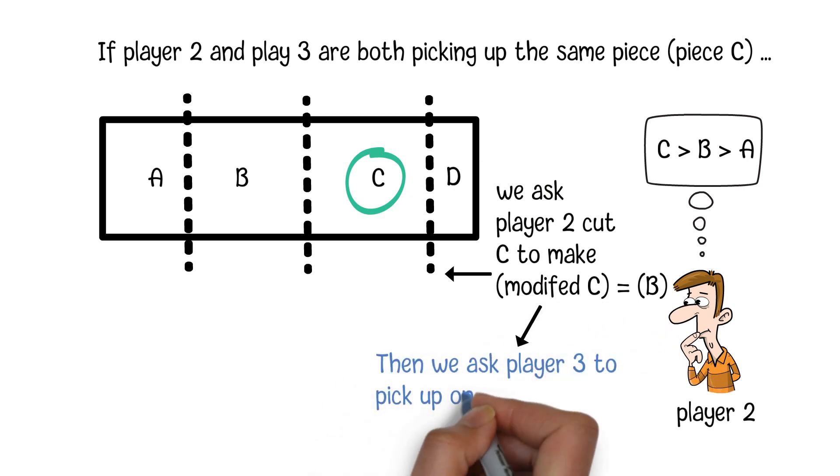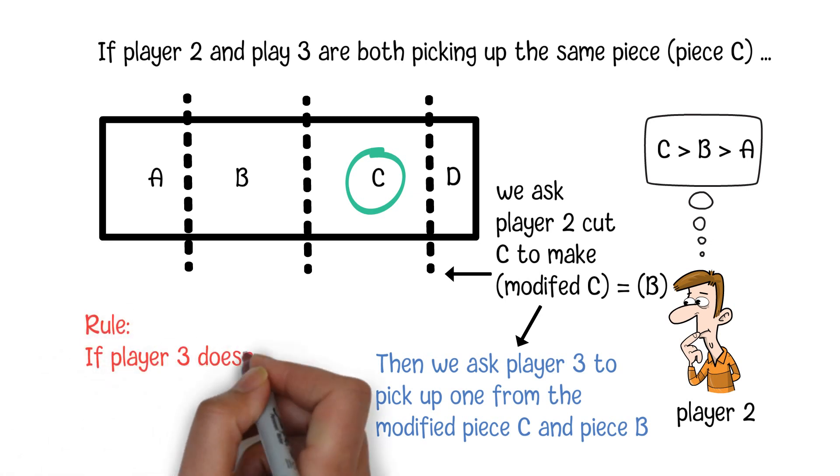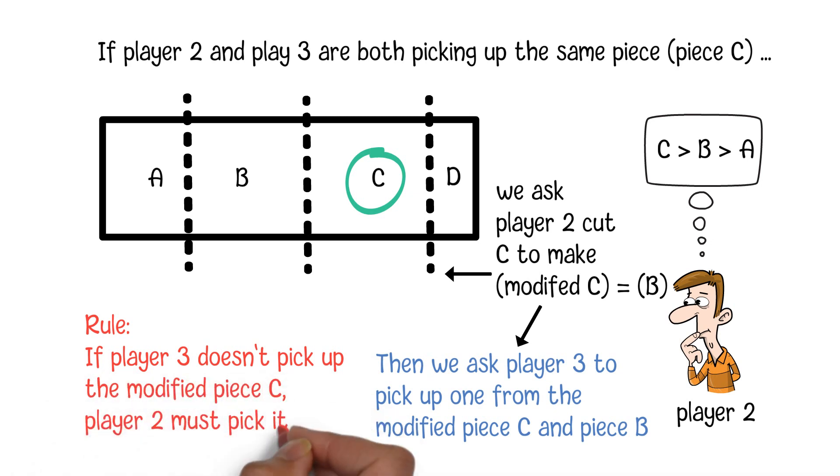Then we ask player 3 to pick up one from the modified piece C or piece B. We will create a rule like this. If player 3 doesn't pick up the modified piece C, player 2 must pick it up. This means that modified piece C cannot be left to player 1.